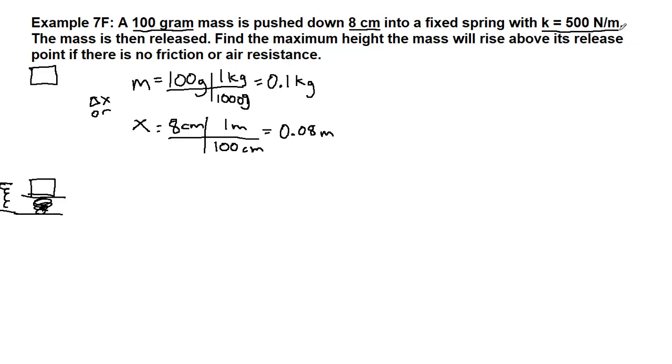And we're given the spring constant labeled as k for us. That k is the spring constant and it is used in the potential energy of a spring term. And then we're told that the mass is released. So if we go back to our picture we know that we have trained ourselves to draw the before and after very clearly for ourselves.